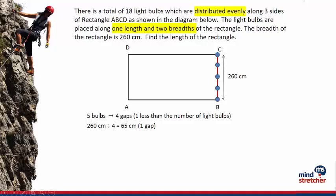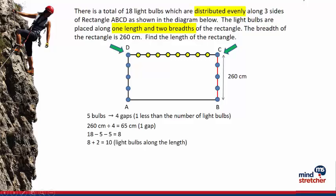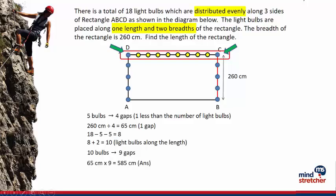Similarly, there are five bulbs on the other breadth of the rectangle. From the 18 bulbs, we subtract five bulbs from each breadth, giving us the remaining eight bulbs. Note that there are two additional bulbs from the corners C and D. Hence, there is a total of 10 bulbs along the length of the rectangle. For the 10 bulbs, there are nine gaps among them. If each gap is 65 centimeters, the total length of the rectangle will be 585 centimeters.